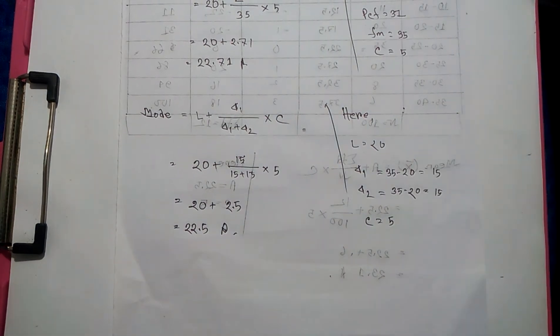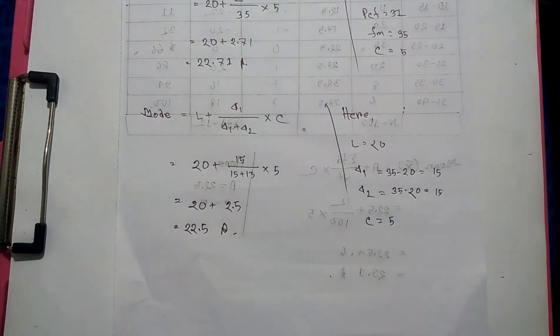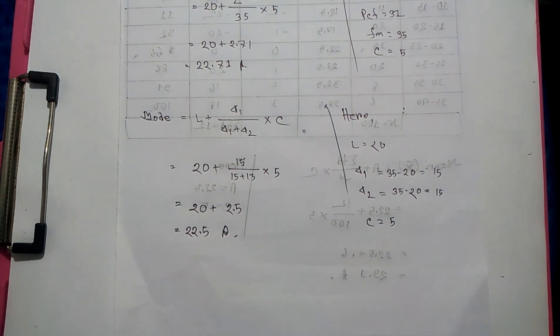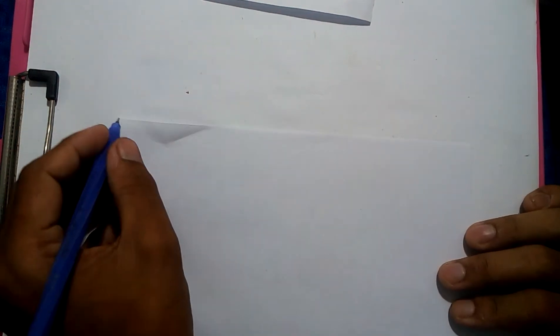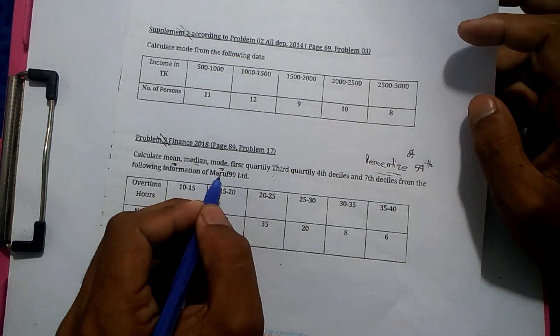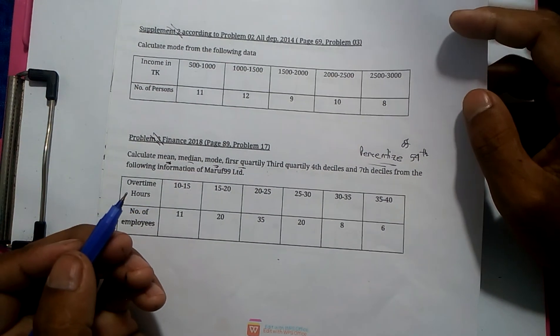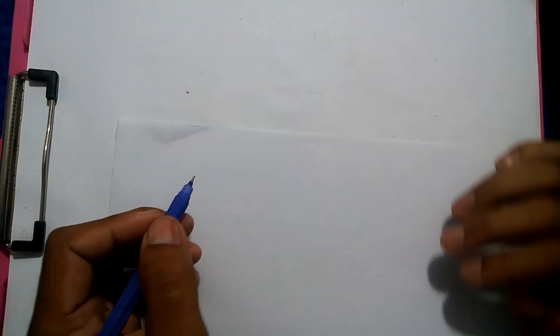So for the quartile — similar to how we calculated the median, we now look at the quartile. These are quite easy. Now I want to show how the quartile is calculated — we've already learned mean, median, and mode. Let's look at the first quartile Q1 and how it's derived. So first quartile — let's learn the quartile.